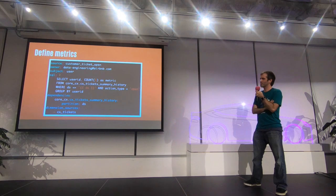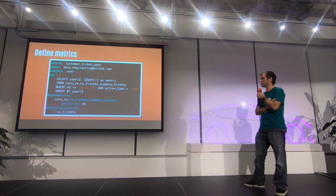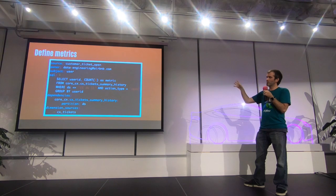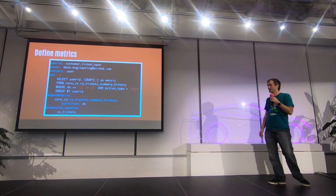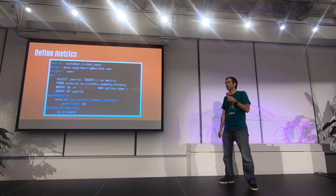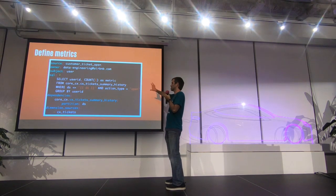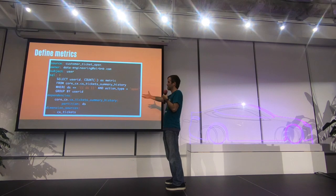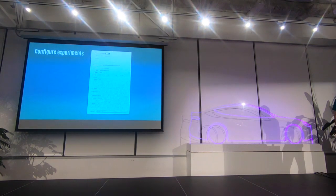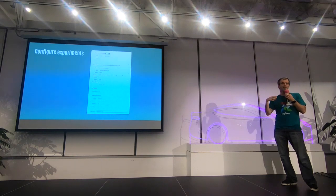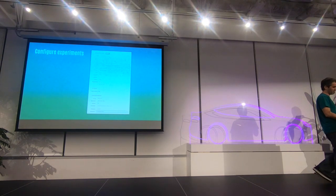At Airbnb, to create a new metric available for people to use in experiments, we're looking at something called 'customer ticket open' — an event where someone opens a customer experience ticket. Someone owns this metric, the subject is defined as 'user' — and there are different types of experiments: user-centric, cookie-centric, host-centric. This metric is defined as SQL code, we define the dependencies, and that's basically how you add a new metric into the system. With all this information, we build this very complex pipeline on behalf of the user.